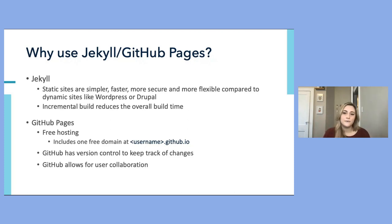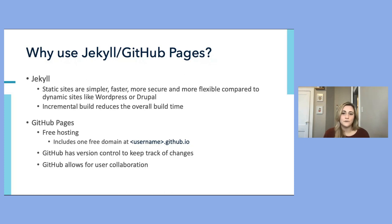GitHub also offers a free hosting option by including one free domain for each GitHub account, available at your username.github.io. It also has version control, so it helps you keep track of changes to your site and allows for multiple users to collaborate on one repo — for example, how we collaborate on the scikit-learn blog.